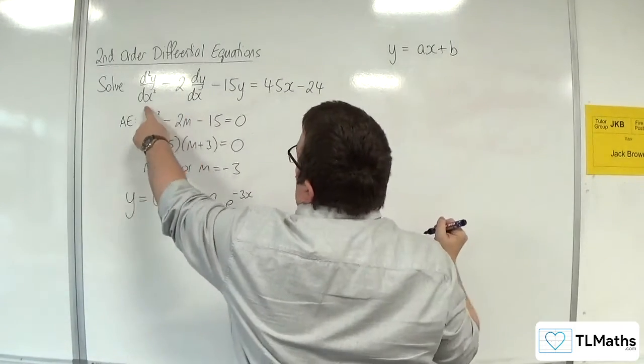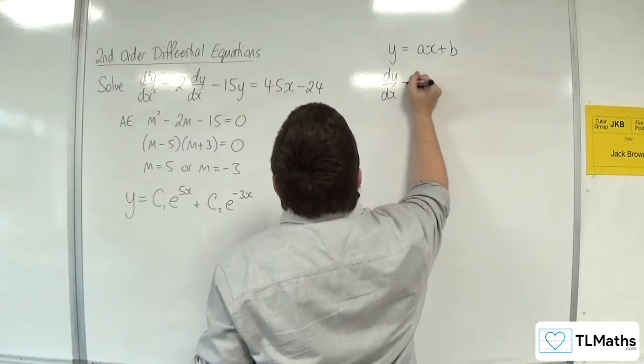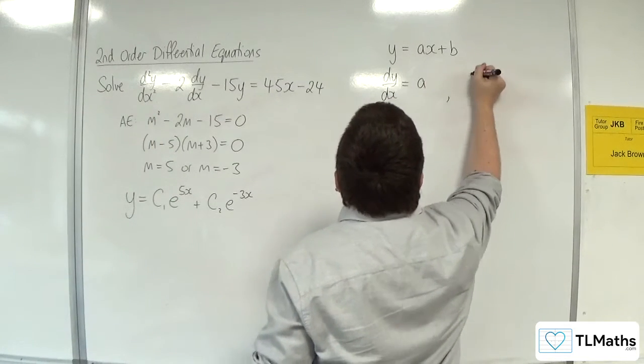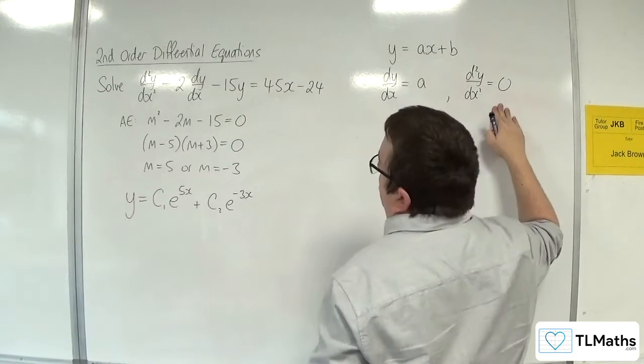So I need dy/dx and d²y/dx². dy/dx would be equal to a, and d²y/dx² would be equal to 0, differentiating through.